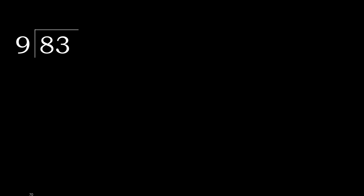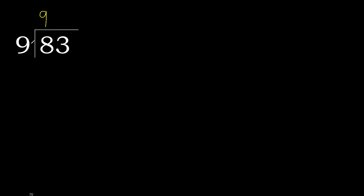83 divided by 9. 8 is less, therefore move to the next digit. 83 is not less, so we work with 83. 9 multiplied by which number is nearest to 83 but not greater? 9 multiplied by 9 is 81. 81 is not greater than 83. Subtract: 83 minus 81 equals 2.